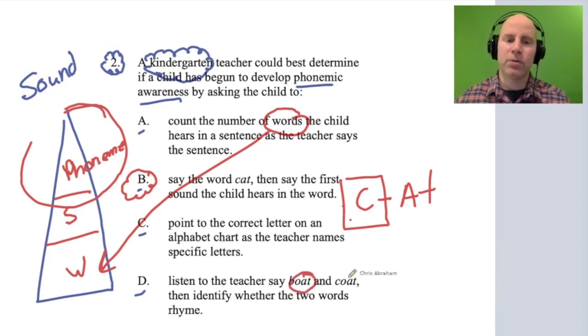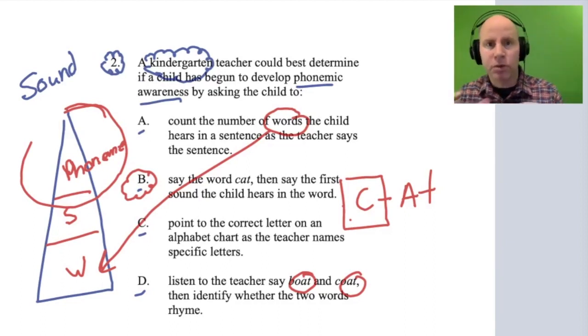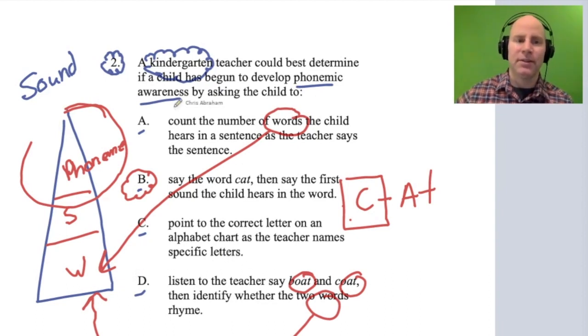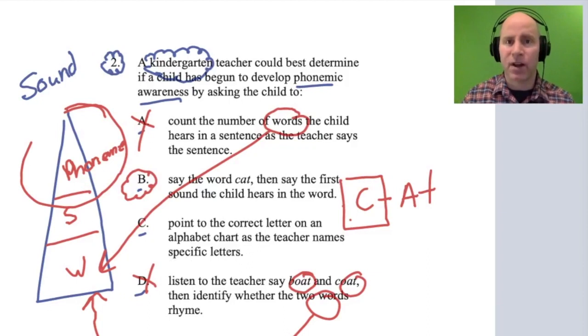And D: they say the word boat and coat and the child identifies if they rhyme. If they could hear that boat-coat, mouse-house, cat-bat have similar endings, this is making observations on a word level—basic phonological awareness. So A and D are basic phonological awareness skills. B is that phonemic awareness activity dealing with the distinct phonemes.